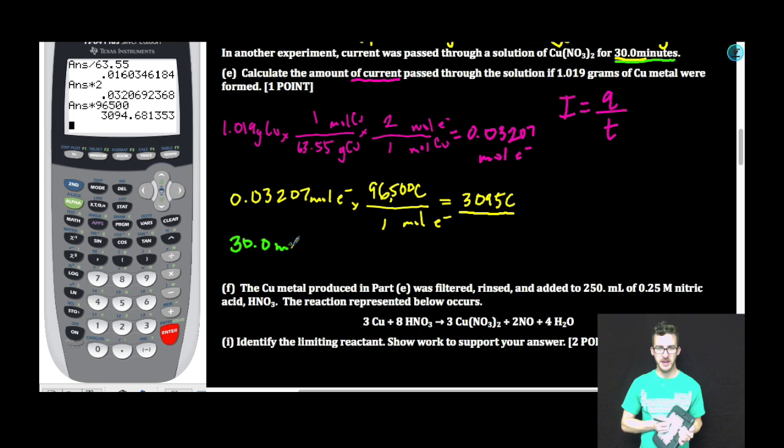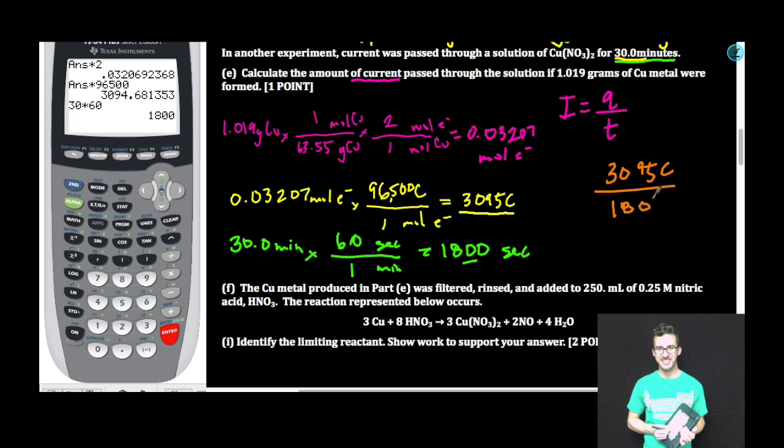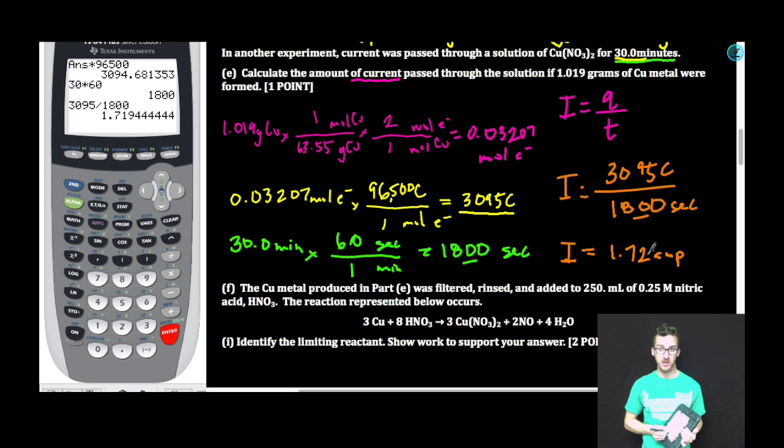And if we're trying to determine the current, we need to first convert that to seconds. So 30.0 minutes equals 1800 seconds. Reminding myself there with sig figs where I should be. To determine the current, I'm just going to take my charge, 3095 coulombs, put it over the time in seconds. 3095 divided by 1800. To three sig figs, my current that was passed through this cell, 1.72 amps, or you could say coulombs per second. Done.